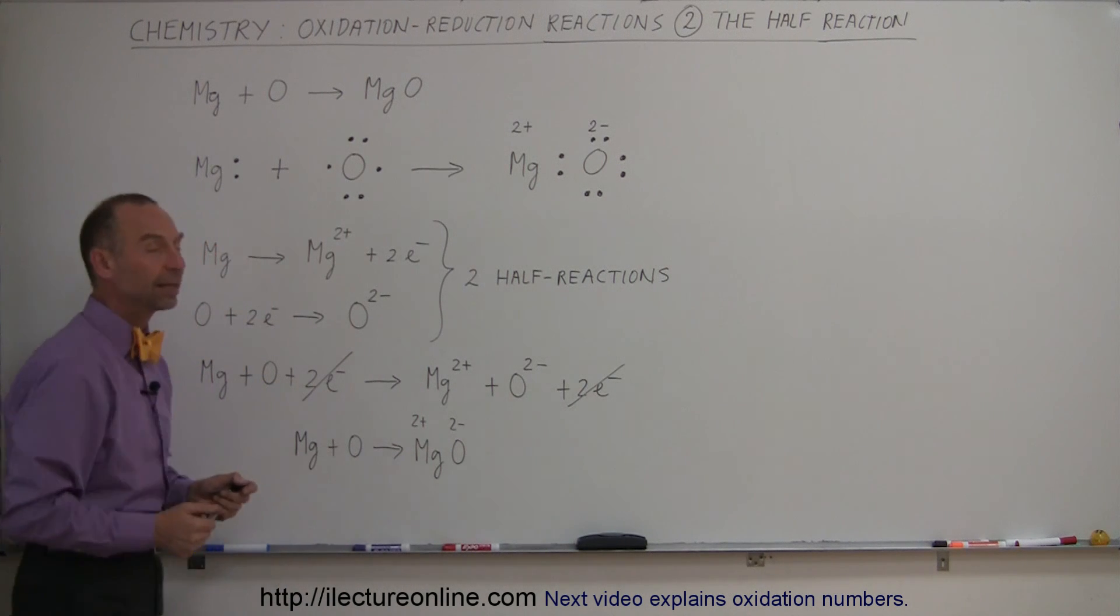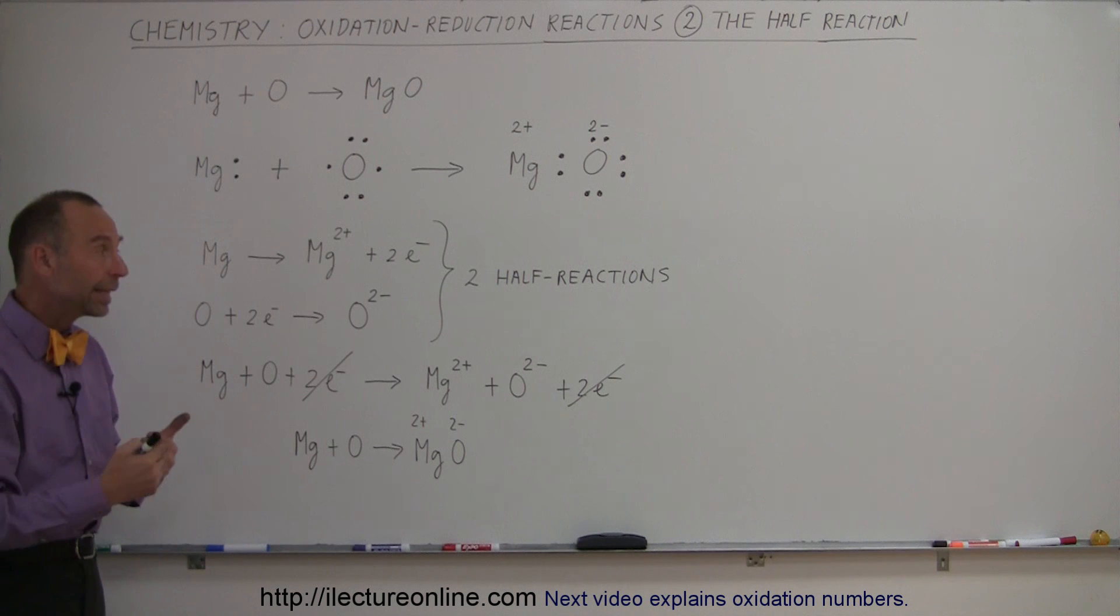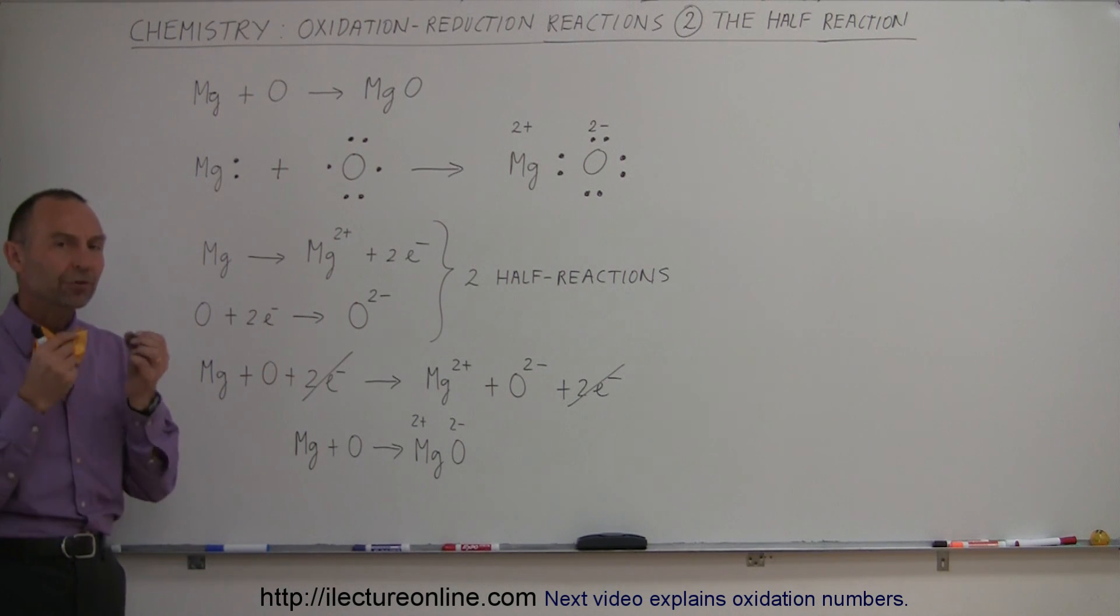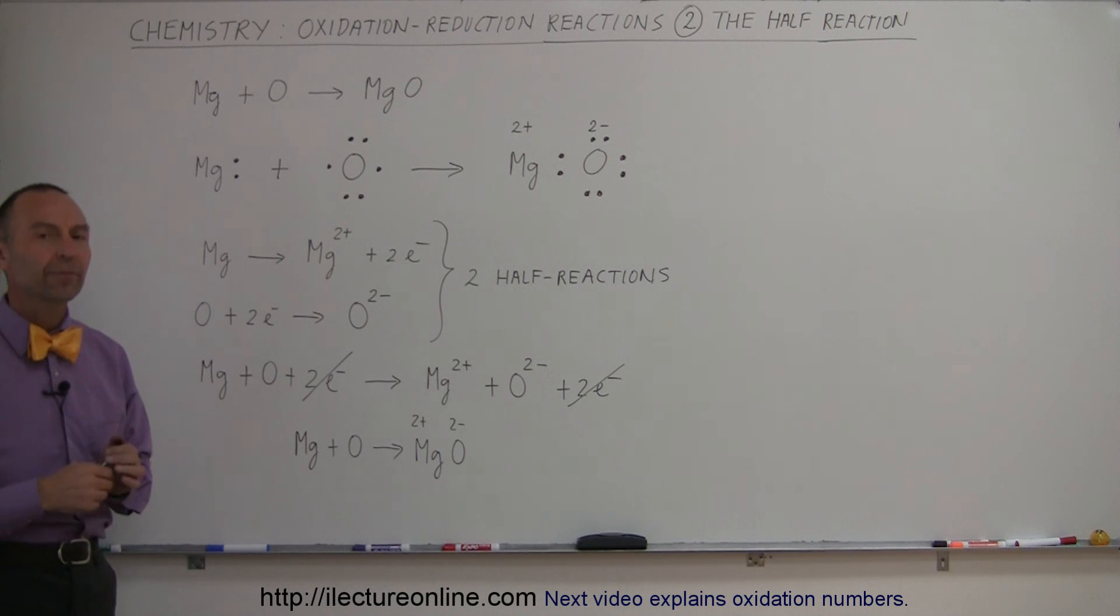and we end up with the net equation right here. The reason why we do that is that later on when the reactions get very complicated, using the technique of half-reactions will help us figure out how the electrons are being moved around and shared by each other, how they go from the reducers to the oxidizers and vice versa.